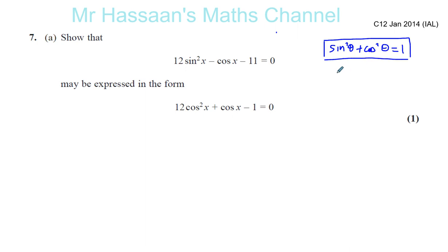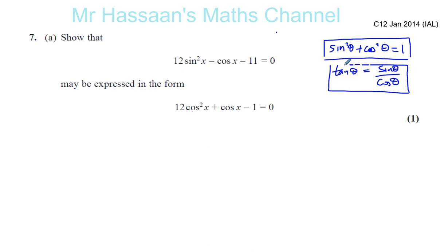Another identity — which may not be used here — is that tan theta equals sine theta over cosine theta. These two identities are really essential for you to know in C2, and also later on when you go on to trig in C3 and C4. All the other identities that come up later can be derived from these anyway.